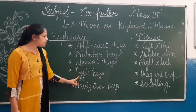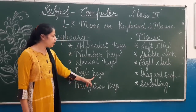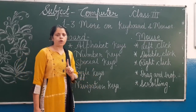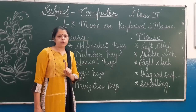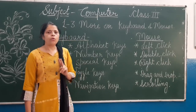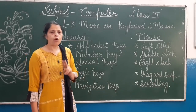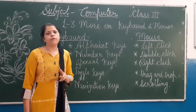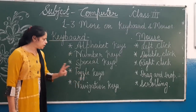Next is toggle keys. We have two toggle keys: number one is caps lock, and number two is num lock. You can see caps lock and num lock — we can use them on and off. So these two keys are toggle keys.